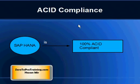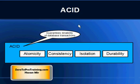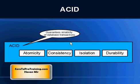Being ACID-compliant is a very important attribute of a database. SAP HANA database is 100% ACID-compliant. ACID compliance guarantees the reliability of database transactions. The four attributes covered under ACID compliance are: Atomicity, Consistency, Isolation, and Durability. SAP HANA database offers all these qualities.